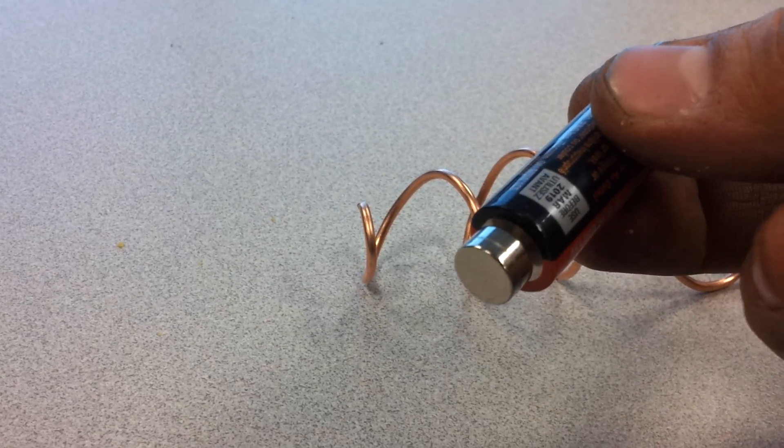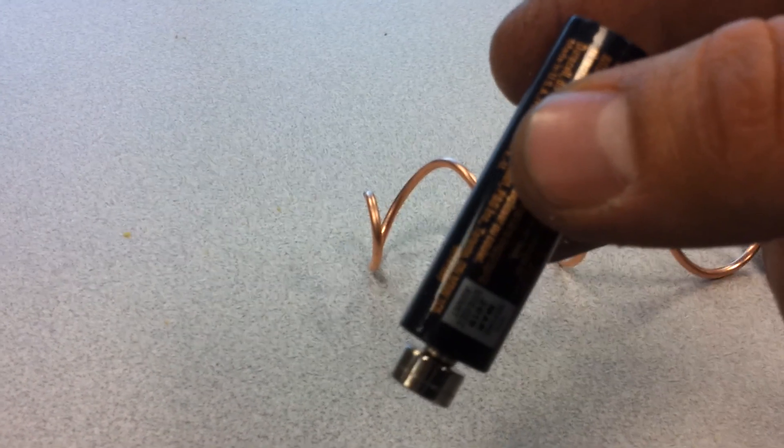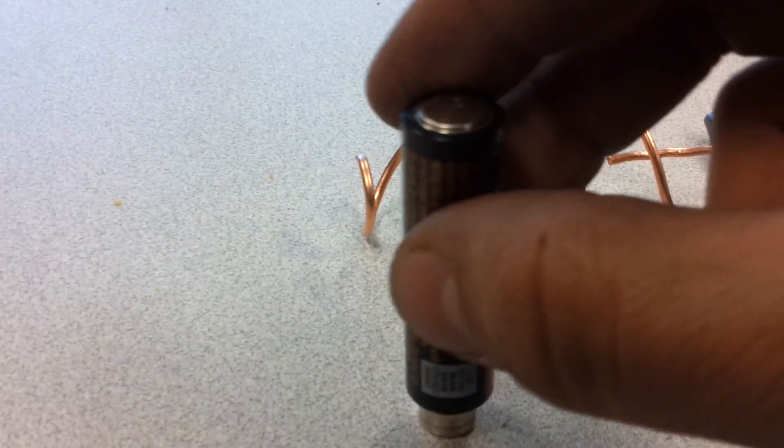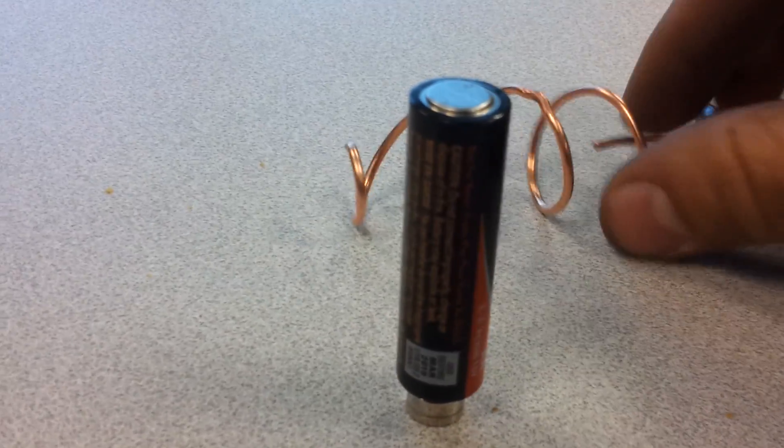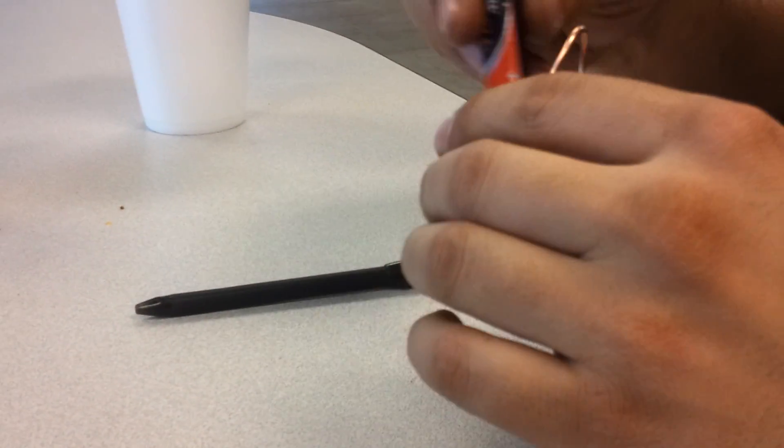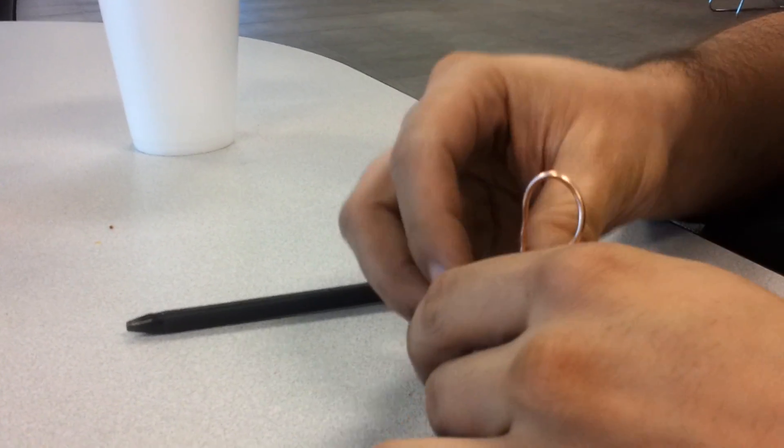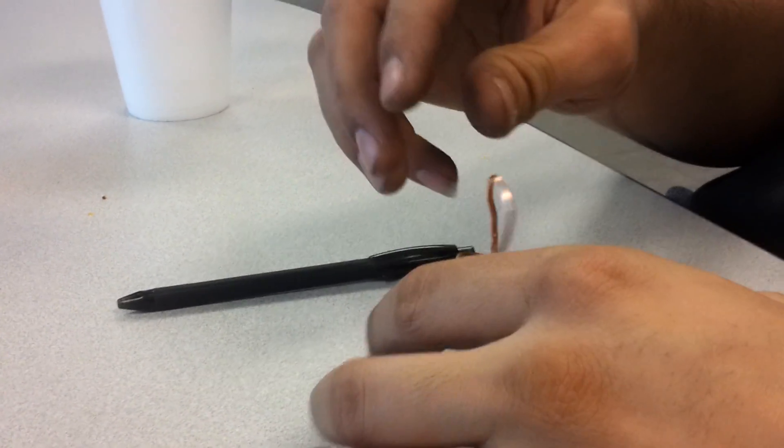So you put the magnet on the battery. I'm doing it this way just because it gives it a little bit more space. Go like this here. One second. This takes two hands. Slide it through there, set it down, set it on there.